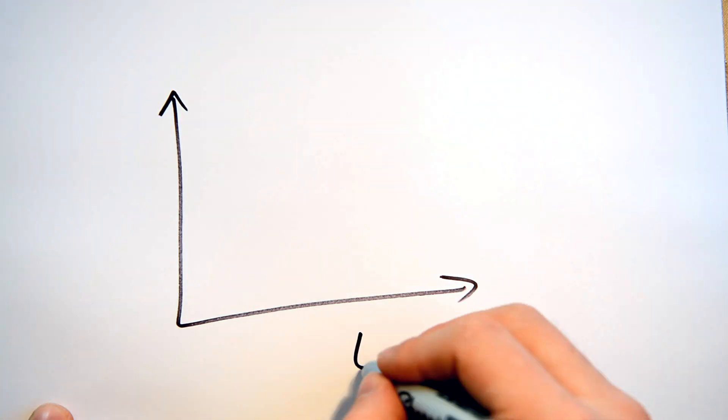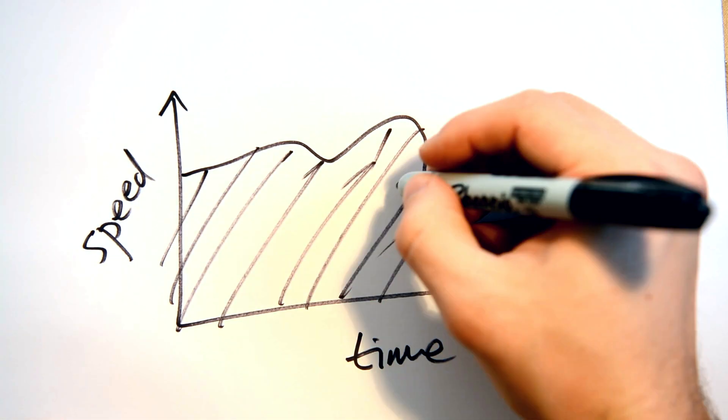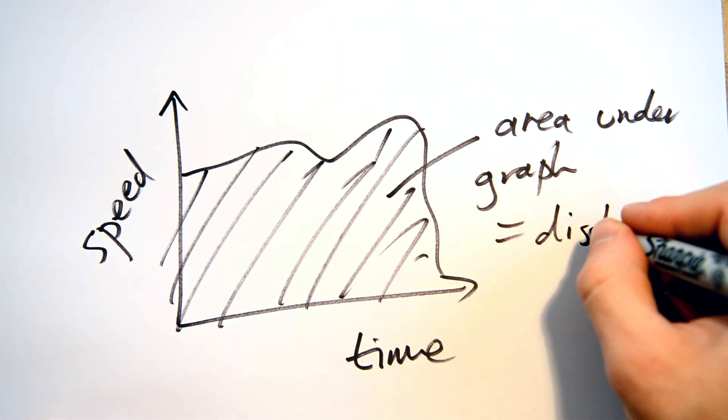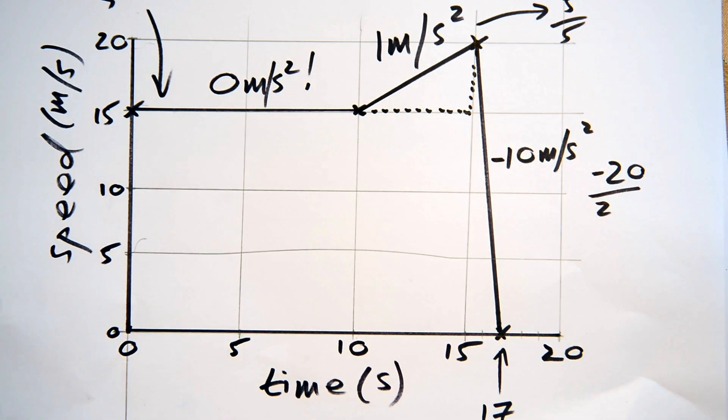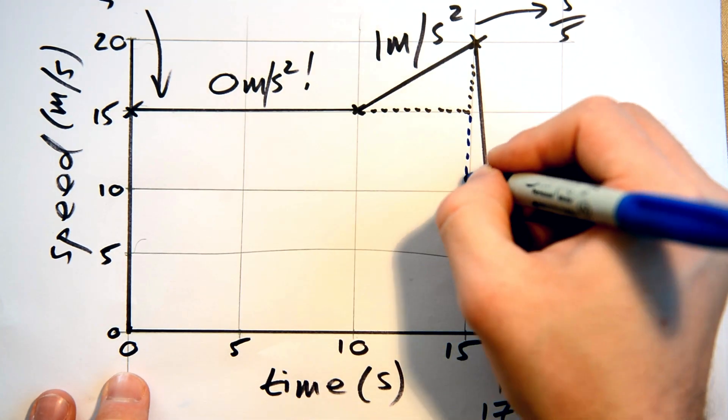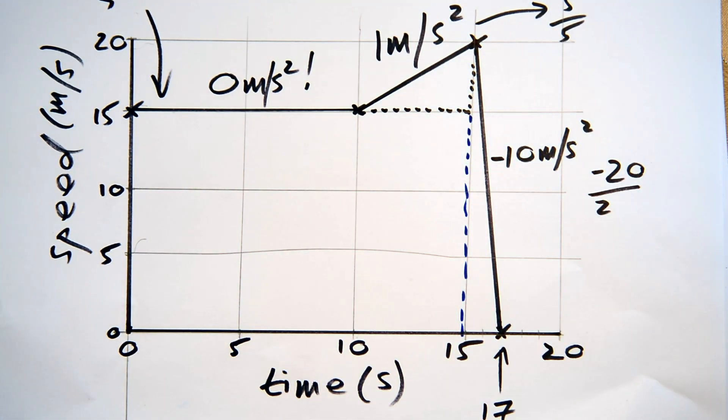But that's not all. It turns out that calculating the area under the graph gives us the distance travelled. Spooky. To do this, you must split the area into rectangles and triangles. The fewer you have, the better. For example, I'd split up this graph like this. You multiply the sides of a rectangle to find its area, and multiply the sides of a triangle, and then divide by two to find its area. Then add them all up.